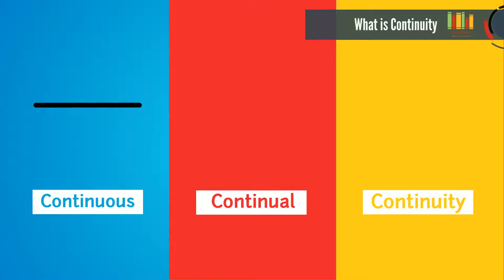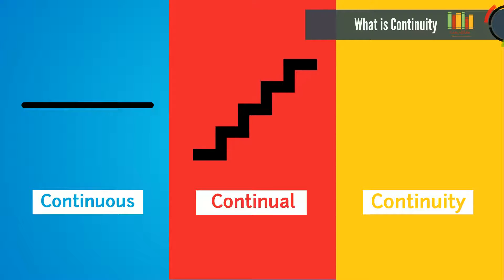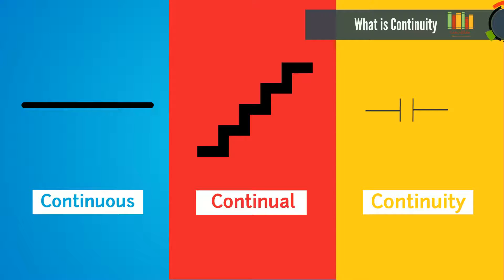Continuous is a continuous line between two points. Continual is step-by-step movement from one point to another. Continuity has a break and starts again before reaching the end point. You should now have a clear understanding of the difference between continuous, continual, and continuity.